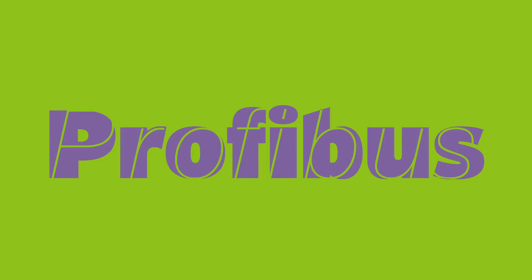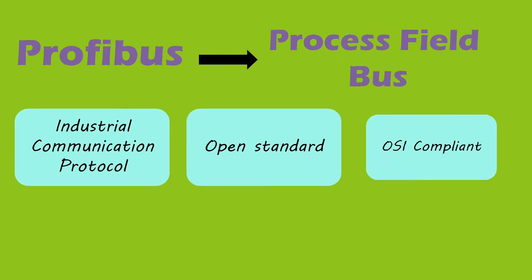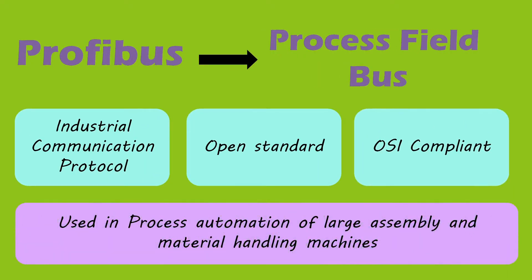Now let's start with Profibus. Profibus stands for Process Fieldbus. It is an open standard industrial communication protocol — an OSI-compliant, widely accepted networking protocol, commonly found in process automation and in large assembly and material handling machines.